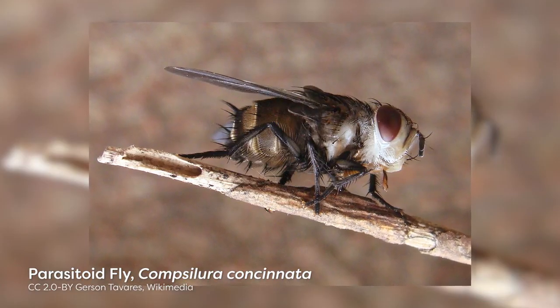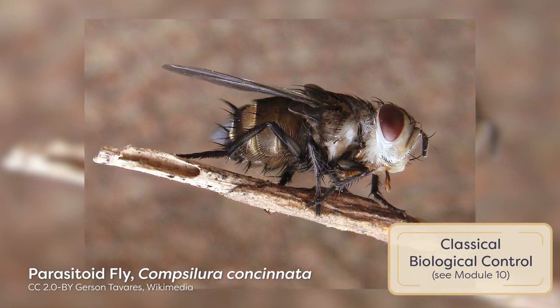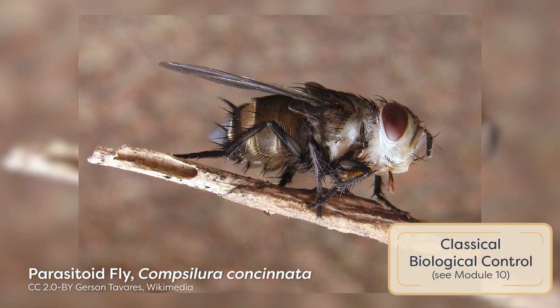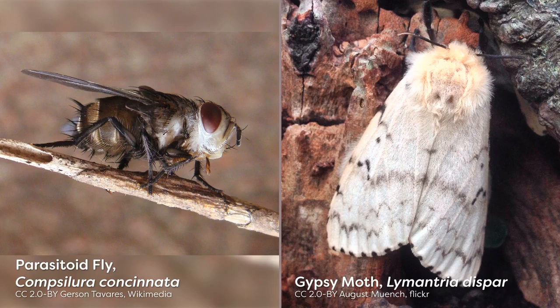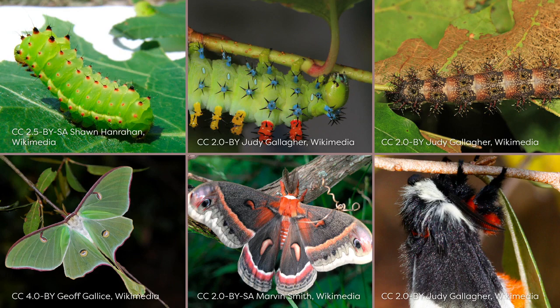Sometimes species are introduced into a new area on purpose, although there may be unintended consequences if thorough research is not performed prior to release. In the early 20th century, the parasitoid fly Compsilura concinnata was deliberately introduced into the United States for classical biological control of the significant forest defoliator, the gypsy moth. Its introduction resulted in the unintentional attack of more than 200 types of native insects. Populations of some giant silkworm moths have been reduced up to 80% due to parasitism by these flies. The magnitude of potential damage from introduced control agents is often unrecoverable, so extensive screening must be done before an organism can be imported as a biological control agent.